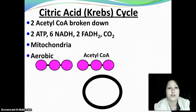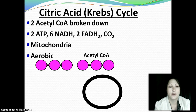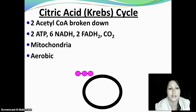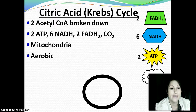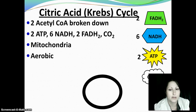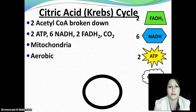The next step is the citric acid or Krebs cycle. During this step, the acetyl-CoA that we just made is going to be broken down. If you take biochemistry after Bio 101, you'll have to learn all the fun steps in here, but for our purposes just know that acetyl-CoA is broken down. You're going to generate a whole lot of stuff: two FADH2s — those are our shopping carts — six NADHs, two ATPs, and carbon dioxide, that gaseous waste product that we exhale. It happens in the mitochondria, so it has to be aerobic.